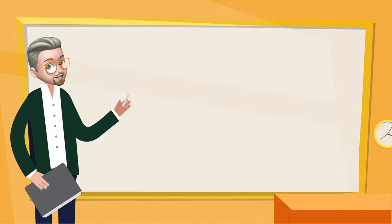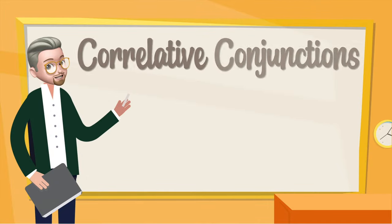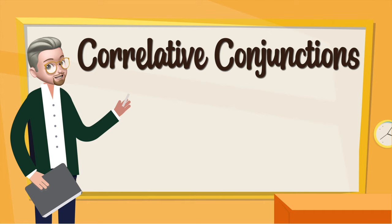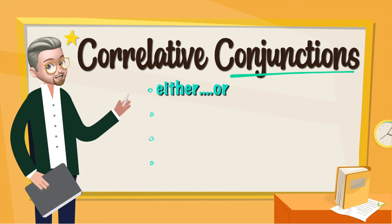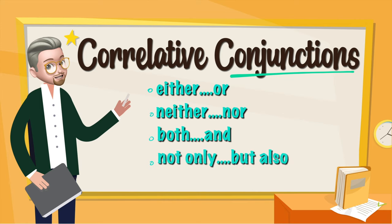Hello everyone, this is Mr. P. On today's lesson we're going to take a look at correlative conjunctions. Either or, neither nor, both and, not only but also, etc. Let's get started.